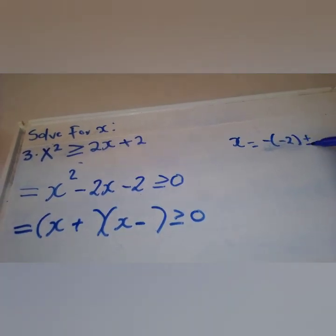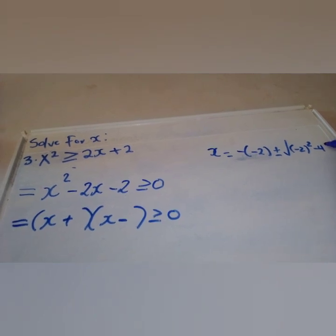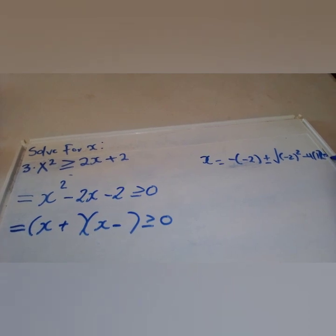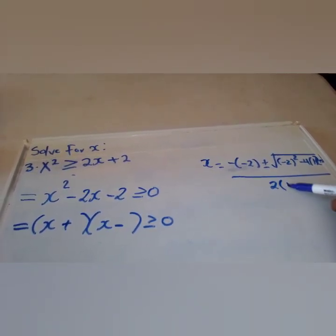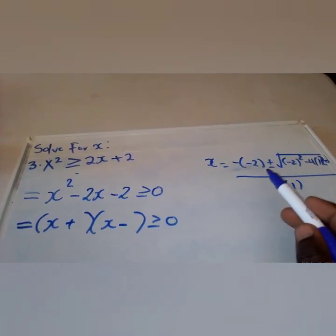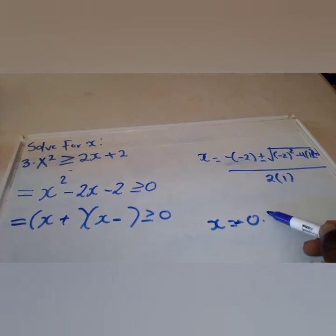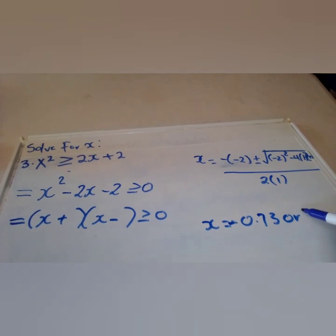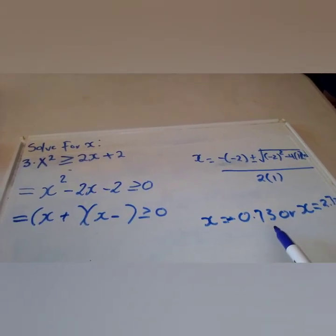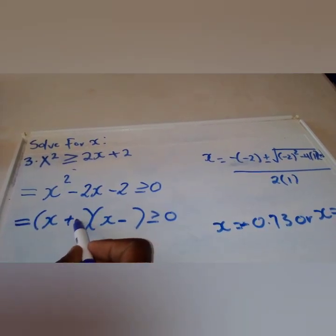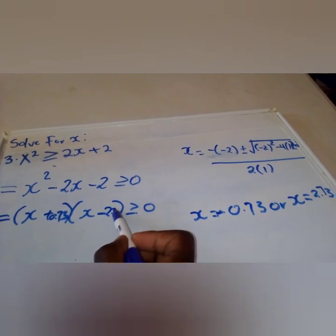Using the quadratic formula: x equals negative b plus or minus the square root of b squared minus 4ac, all divided by 2a. Here a = 1, b = −2, c = −2. Substituting: x = (2 ± √(4 − 4·1·(−2))) / 2. Splitting the result gives approximately x = −0.73 or x = 2.73. The negative value takes the positive sign position and vice versa.